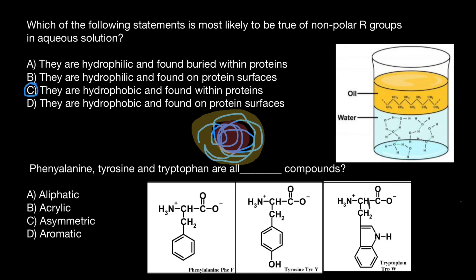And next question, phenylalanine, tyrosine, and tryptophan are all what compounds, and you have to choose one of these answers. As long as you see such hexagon in amino acid, you know that this is aromatic amino acid. So answer D.